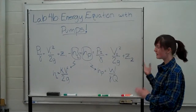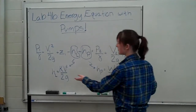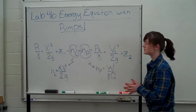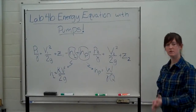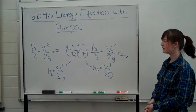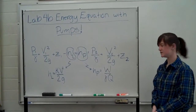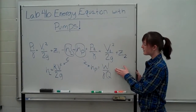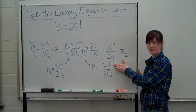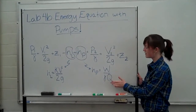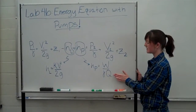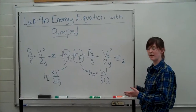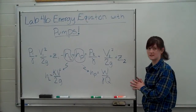The head loss we'll assume is a standard form of some coefficient k times the velocity through the pipe squared over 2g. The head of the pump will be defined as W, or pump power, over gamma Q, or the specific weight times the discharge.